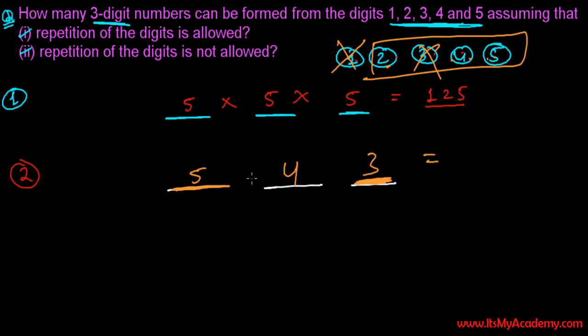So if repetition is not allowed, then five times four times three, five fours are 20, 20 times three, 60. So there are 60 numbers that can be formed from these 1, 2, 3, 4, 5 if repetition of the digits is not allowed.